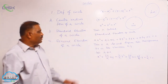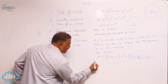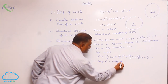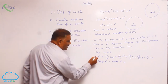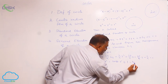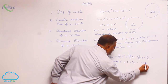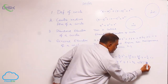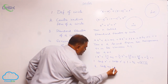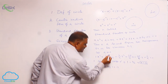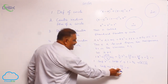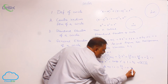Now we apply the conditions. Condition one: coefficient of x square equals coefficient of y square. The coefficient of x square is 1, and here it is b/a, so 1 equals b/a, giving a equals b. Condition two: coefficient of xy equals 0. The xy coefficient is 2h/a equals 0. Since a is not equal to 0, h equals 0.